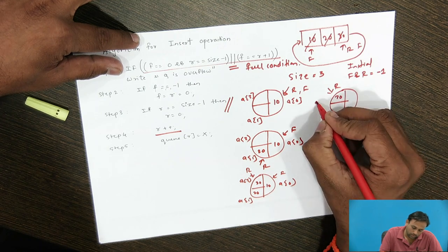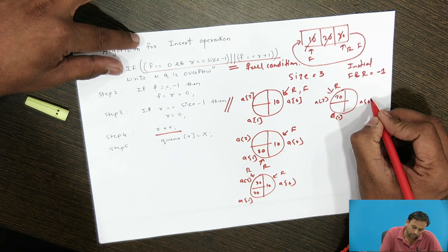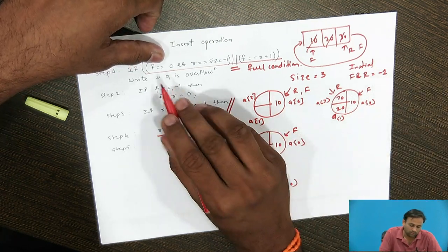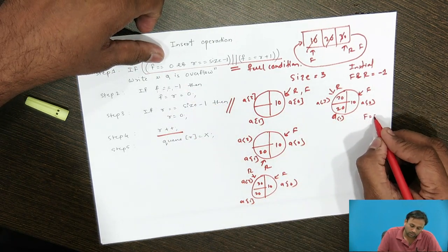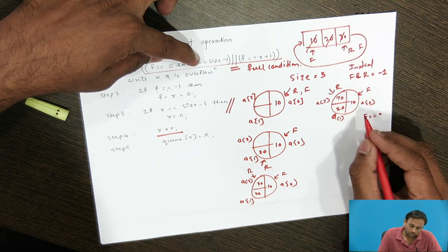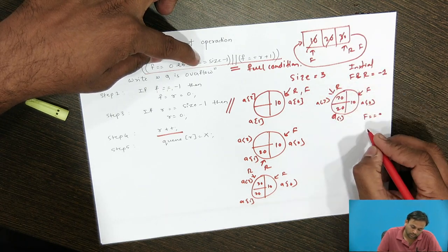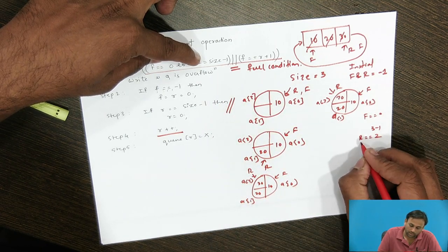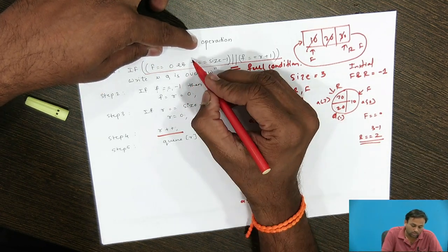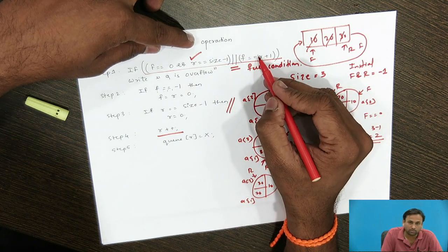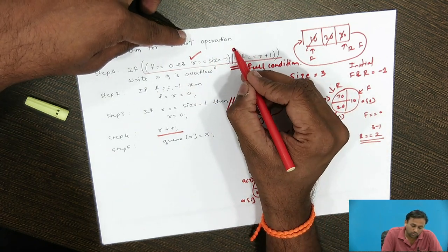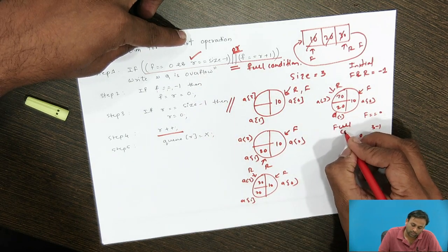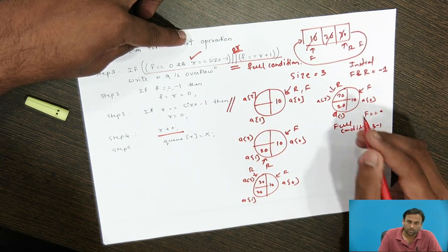Let's verify: A[0] contains 10, A[1] contains 20, A[2] contains 30. F is pointing to 0 and R is pointing to 2. Size is 3, so size - 1 = 2. R == size - 1 is satisfied, so the queue is full and we cannot re-insert new data.